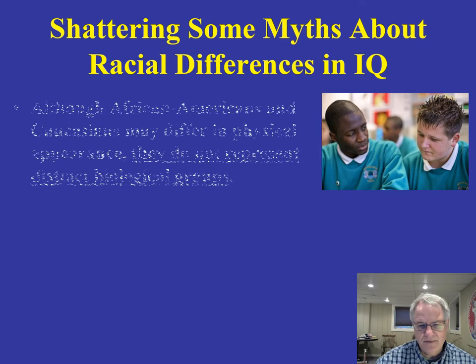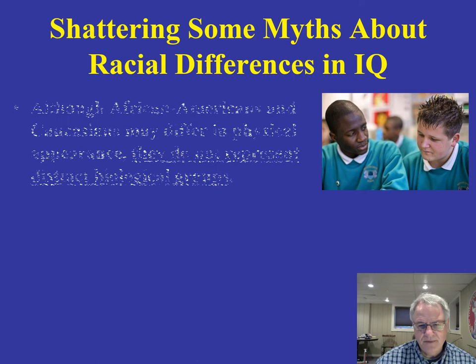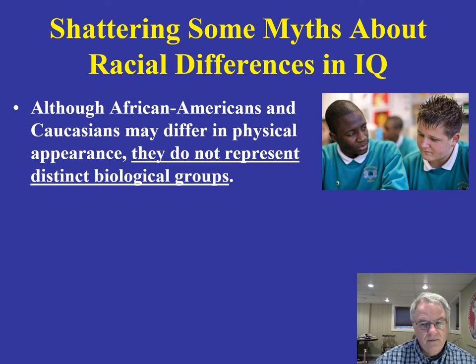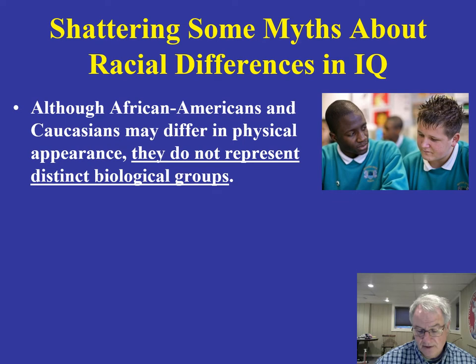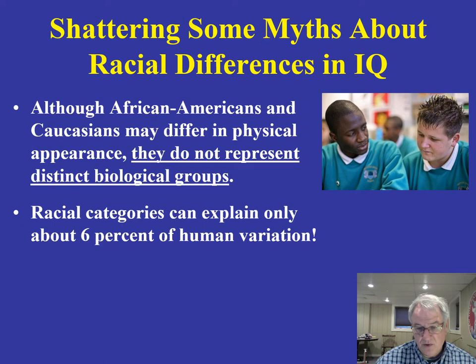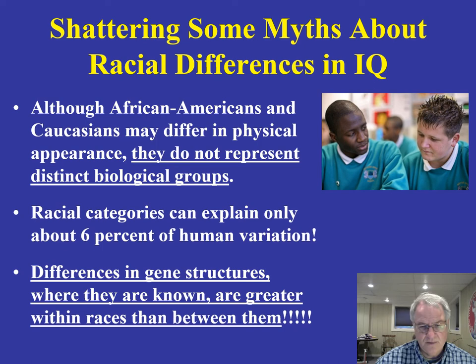There's some mythology here. It's clear that there are physical appearance differences between African Americans and Caucasians, but they don't represent distinct biological groups. When we look at the human genome, racial categories can explain only about 6% of human variation — that's extremely small. Differences in gene structures, where they are known, are greater within races than between races. The whole premise that African Americans and Caucasians represent very different biological groups simply is not true.